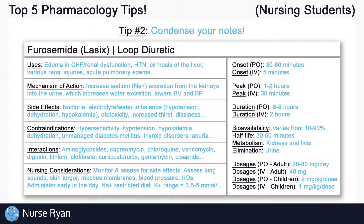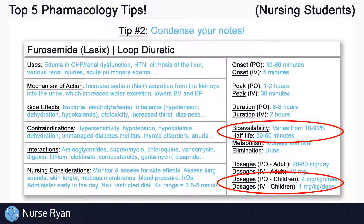Take a look at this example drug card of furosemide, also known as Lasix — it's a diuretic drug. It's got a lot of good info on it and would be a pretty nice drug card to have at clinicals, but chances are you won't need all of this information on your exams. Your professor will likely tell you some things they don't expect you to memorize, like bioavailability, half-life, or pediatric dosing. You also probably don't need to write that someone with a hypersensitivity to furosemide shouldn't use it — that's implied.